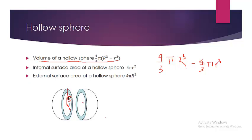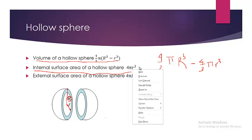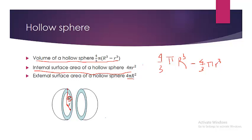A hollow sphere will have two surfaces. A solid sphere has only one surface, that is the external surface, but a hollow sphere has two surfaces. One is the internal surface area, which is 4 π r² (small r), since the internal surface is also like a sphere with radius small r. The external surface area is 4 π R² (capital R). If we have to calculate the total surface area, we add both: total surface area equals 4 π r² + 4 π R², which equals 4 π (r² + R²).